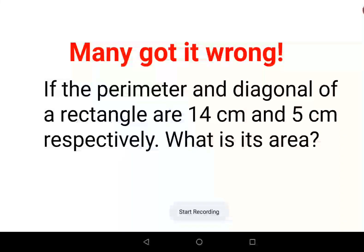Welcome everyone, so today we are going to solve a very nice geometry problem. The question is: if the perimeter and the diagonal of a rectangle are 14 centimeters and 5 centimeters respectively, then what is its area?